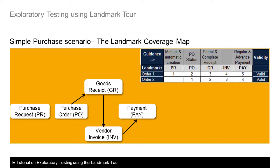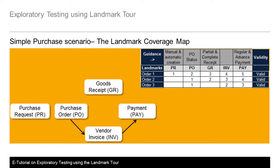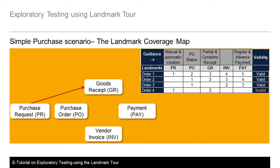Order 2 is also valid and you may like to test it — you can start directly from a purchase order without a purchase request. Order 3 is also valid, as you can directly create an invoice even without a goods receipt and proceed for the payment; this is used when you need to pay an advance to the vendor. However, order 4 is not valid — you cannot directly create a goods receipt against a purchase request, as a purchase order must be created first. You may still want to test this for checking the error routines.